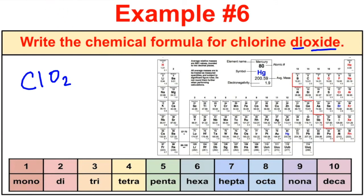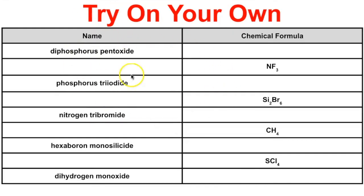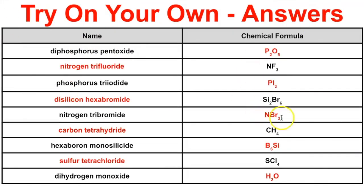Now try some practice problems on your own. Pause the video, get out paper, and try these: write the chemical formula for diphosphorus pentoxide, write the name for NF3, and so on. Here are the answers — hopefully you got them all right. If you like what you see, click the subscribe button in the bottom right corner, and feel free to leave comments or questions below. Hope you found this helpful!